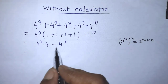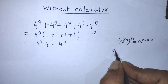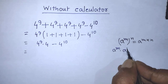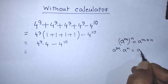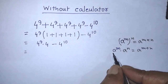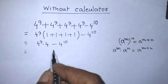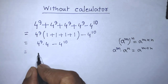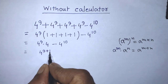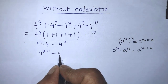To simplify the first term, we apply the exponent multiplication rule: a to the power m times a to the power n equals a to the power m plus n. According to this formula, 4 to the power 9 times 4 equals 4 to the power 9 plus 1, which is 4 to the power 10. So we now have 4 to the power 10 minus 4 to the power 10.